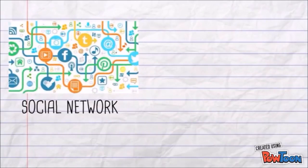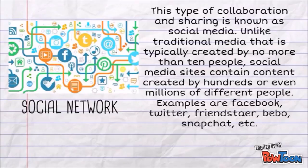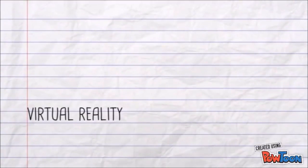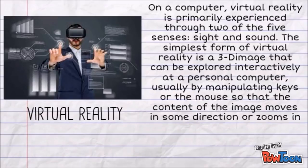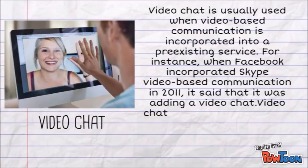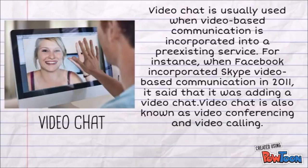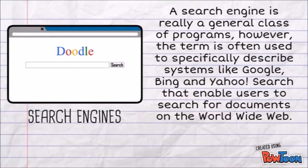Third is the social network — alternatively referred to as a virtual community or profile site — a website that brings people together to talk, share ideas and interests, or make new friends. Fourth is virtual reality, an artificial environment created with software and presented to the user so that the user accepts it as a real environment. Fifth is video chat — online face-to-face visual communication with other internet users using a webcam and dedicated software. Sixth are search engines — programs that search documents for specified keywords and return a list of documents where the keywords were found.